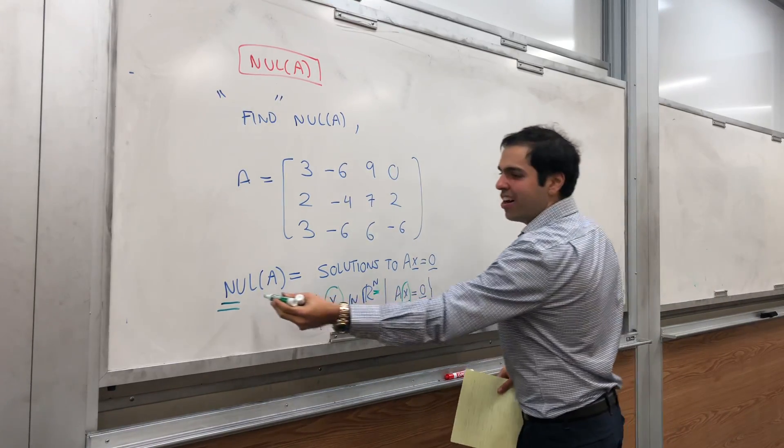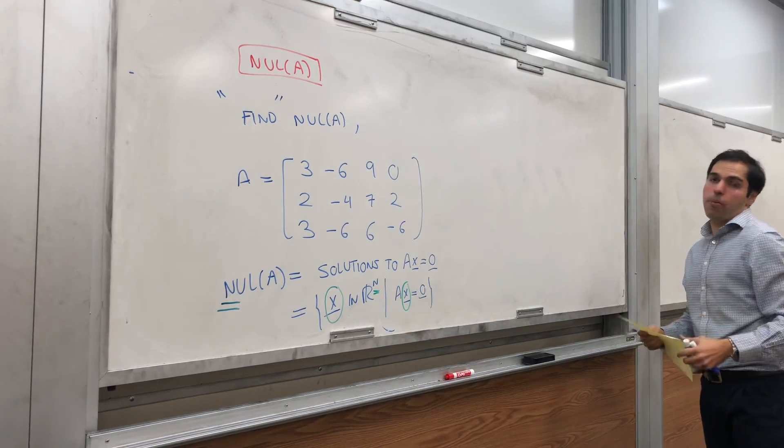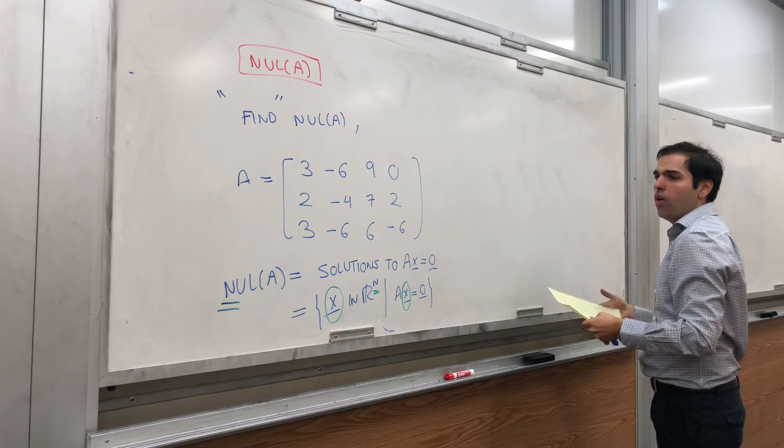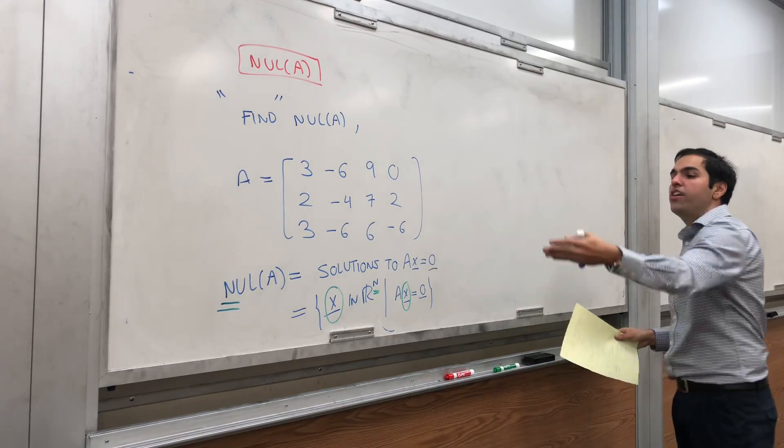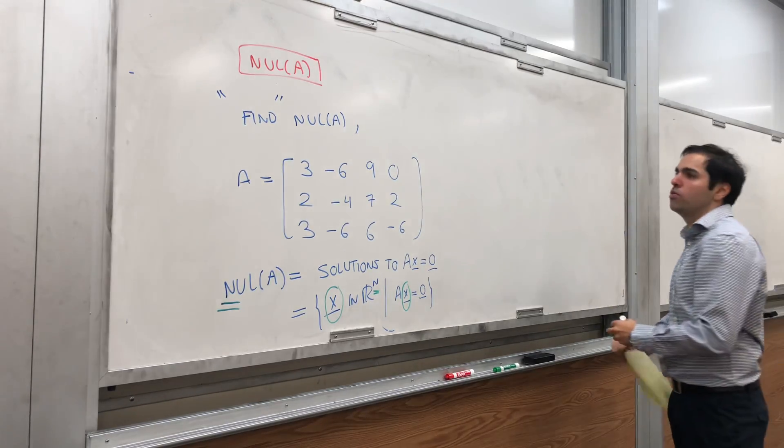You're really looking at the set of X, such that AX equals zero. And, by the way, that's a great mnemonic. N, as in Rn, as in input. That's right. So, it's very good. So, in other words, to find null of A, all you need to do is to solve AX equals zero.